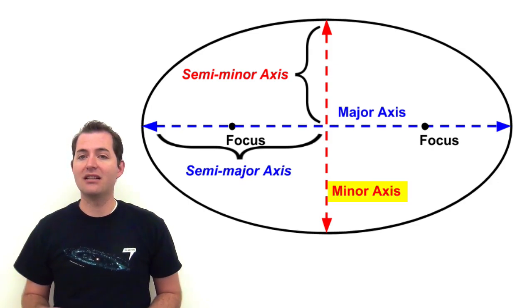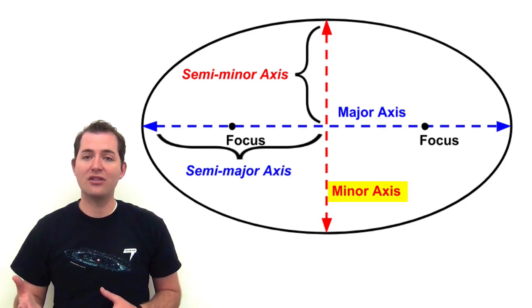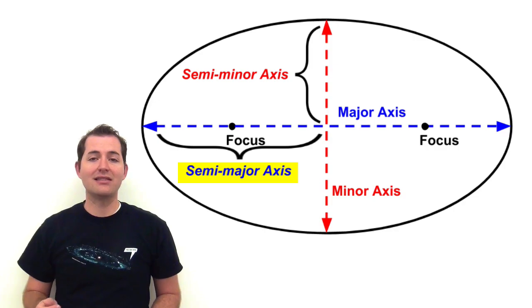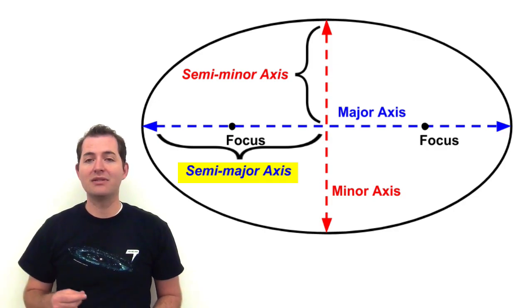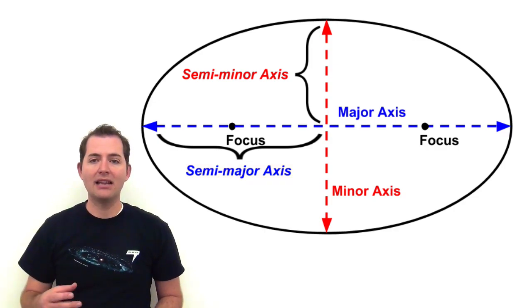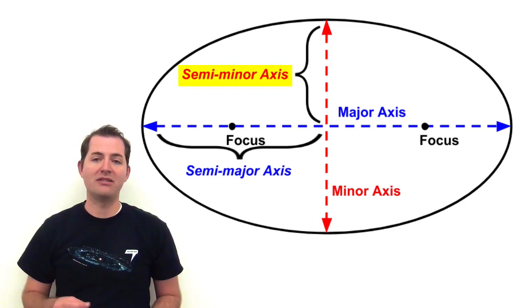The minor axis passes through the center of the ellipse as well and is the shortest diameter. There is also the semi-major axis which goes from the center of the ellipse to the longest edge and the semi-minor axis which goes from the center of the ellipse to the shortest side.